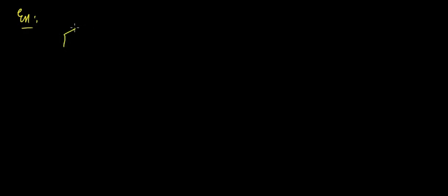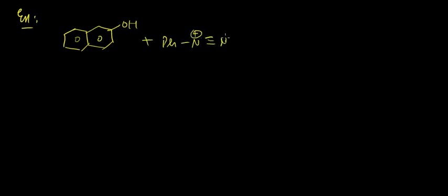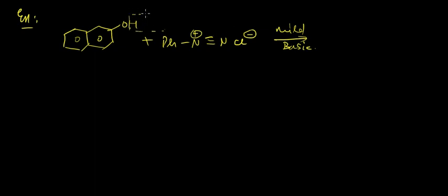Okay, hi guys, so we'll continue with the NN coupling and CN coupling as you saw in the last lecture. Suppose we have an example with this compound — we have an OH group attached, and obviously we are using the diazonium salt as our electrophile. The conditions are mild basic, because the phenol group can donate its H+.